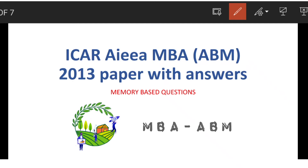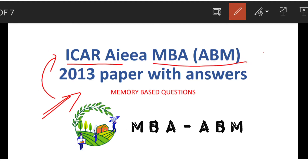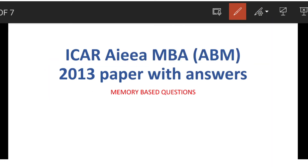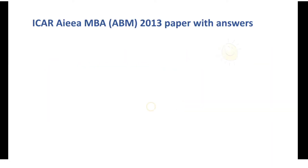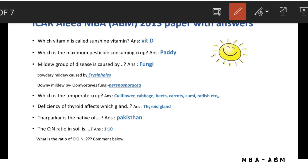Welcome to my channel MBA and Agribusiness Management. In this video we are going to discuss the 2013 ICR MBA Agribusiness Management question paper. Which vitamin is called the sunshine vitamin? That is Vitamin D.